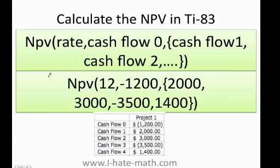Remember, you need to put everything exactly as it is — do not miss any commas, curly braces, or parentheses, or the calculator will give you an error. Now, for the rate, put 12. You don't put it as a decimal — since it's 12%, you just put 12. If it were 5%, you'd put 5; if it were 110%, you'd put 110. Now you're going to put the cash flow zero.